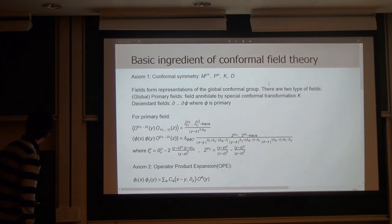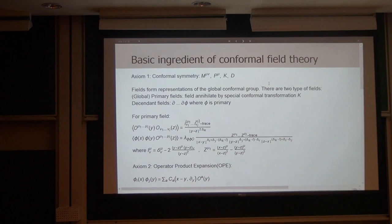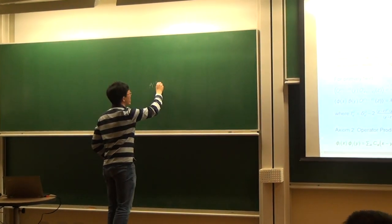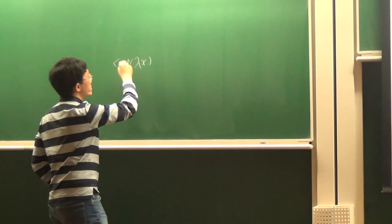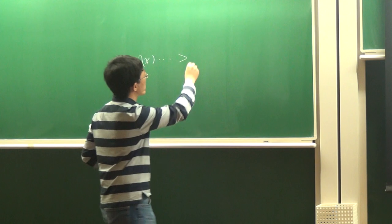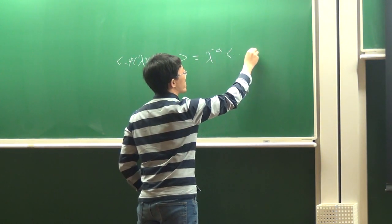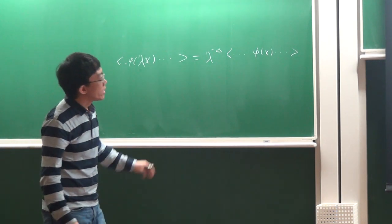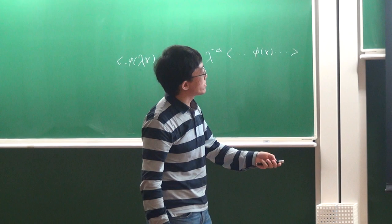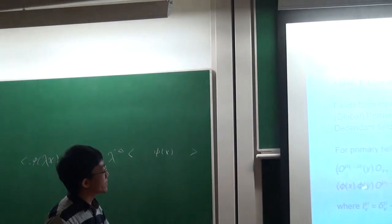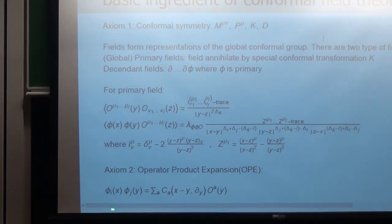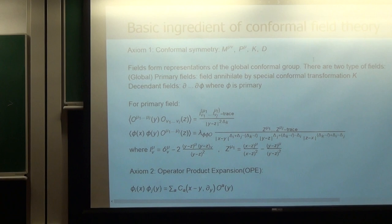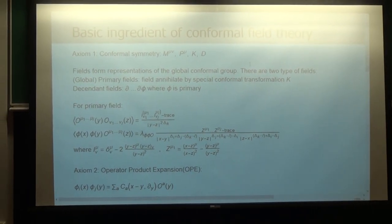For the primary field, it will transform in a specific way. If you have a coordinate inside the correlator, you have to move lambda out of the correlator like this. There is a similar transformation law for special conformal transformations. If you combine special conformal transformation with scaling, it fixes the two-point function uniquely and also fixes the three-point function in a specific form.